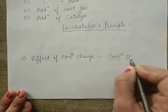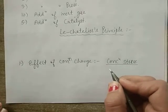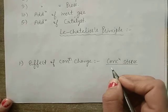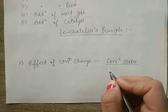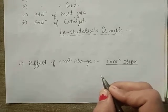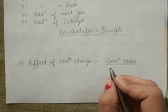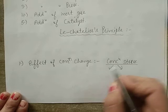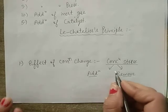The concentration stress due to removal of a reactant or product is relieved by shifting the net reaction in the direction where the removed substance is replaced. Concentration can change in two ways: either by addition or removal of reactants and products.